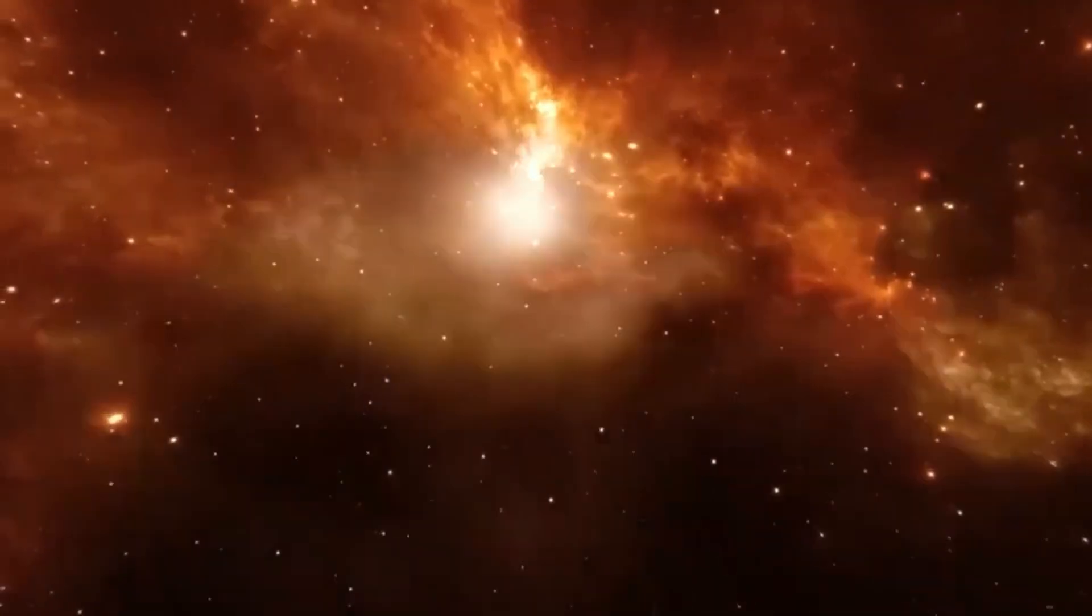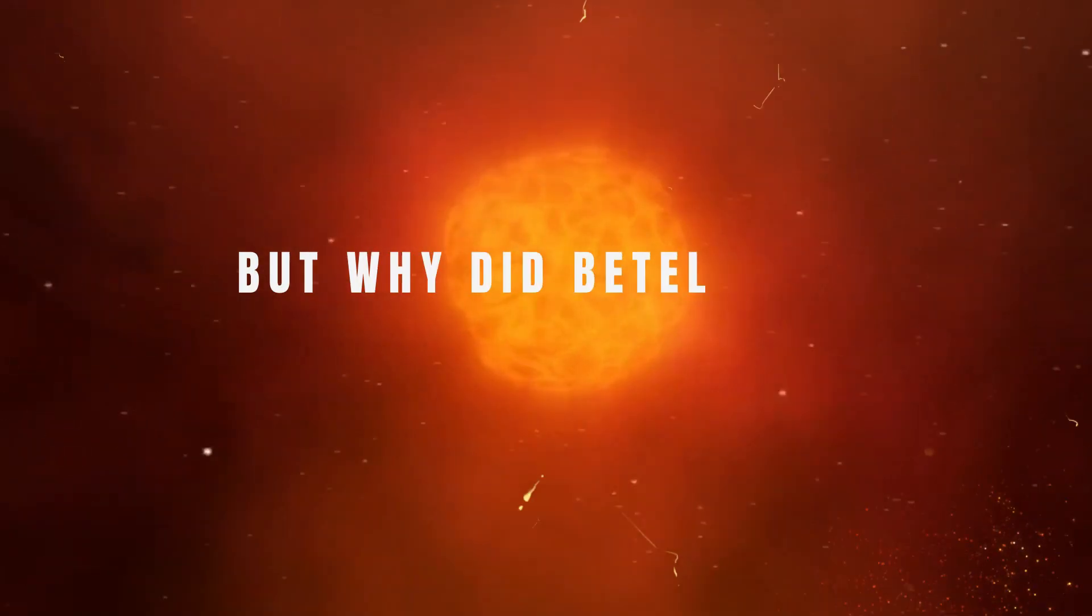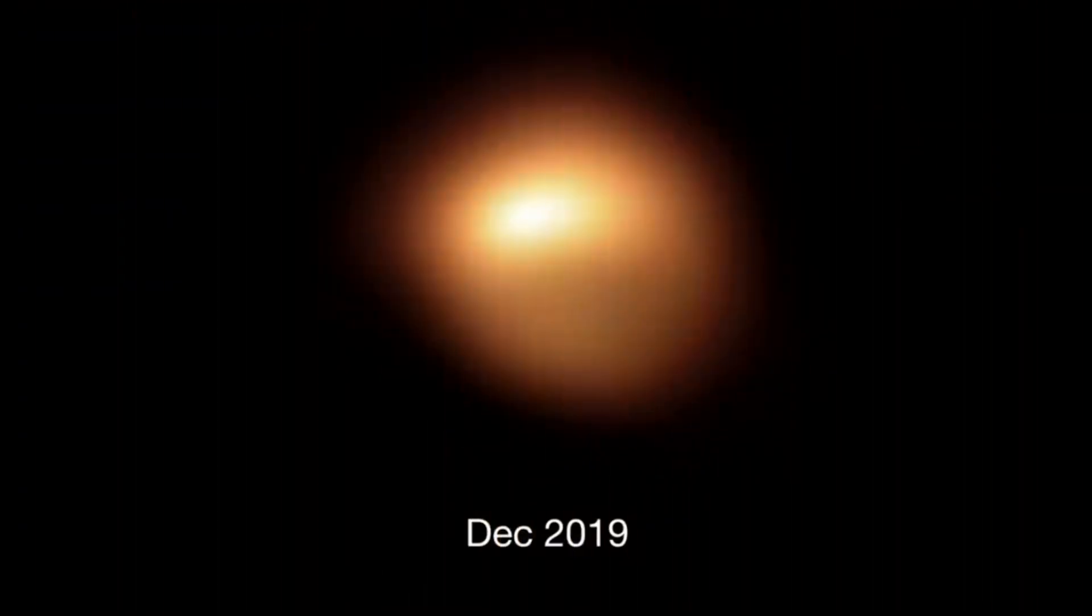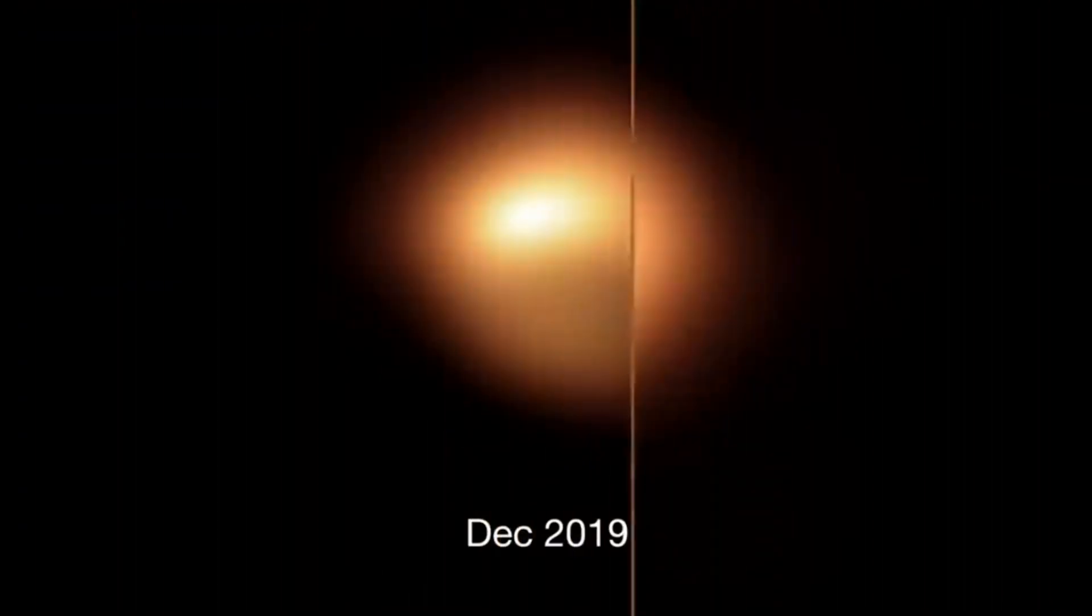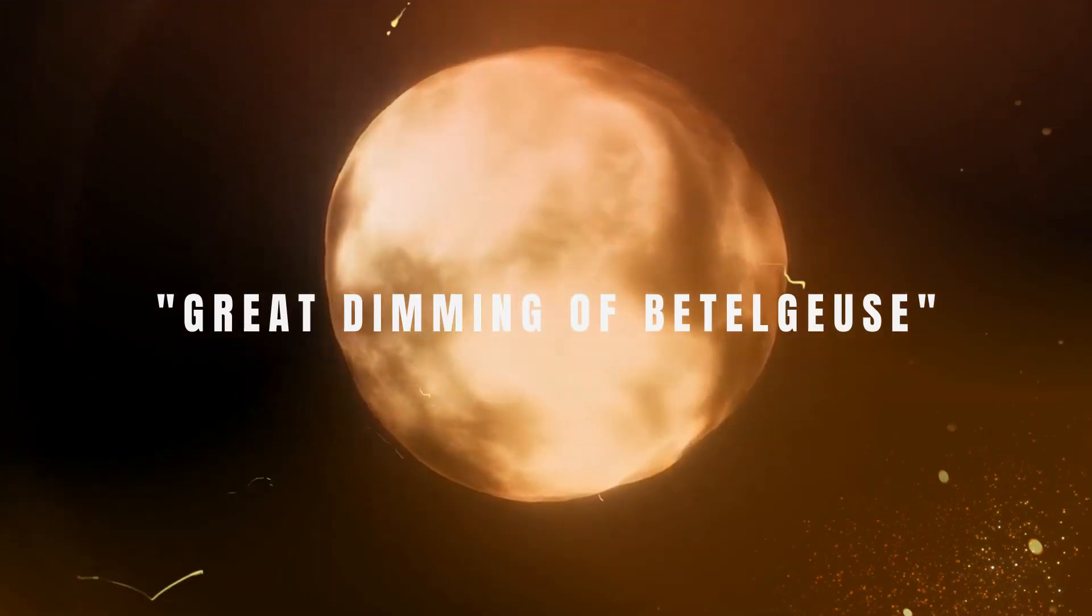Tomorrow, Betelgeuse could go boom. It could go off in tens of years, or it could go off in a thousand years. But why did Betelgeuse dim in 2019? When Betelgeuse started to dim a lot in late 2019, it caught the attention of people all over the world. This is now called the great dimming of Betelgeuse by scientists.